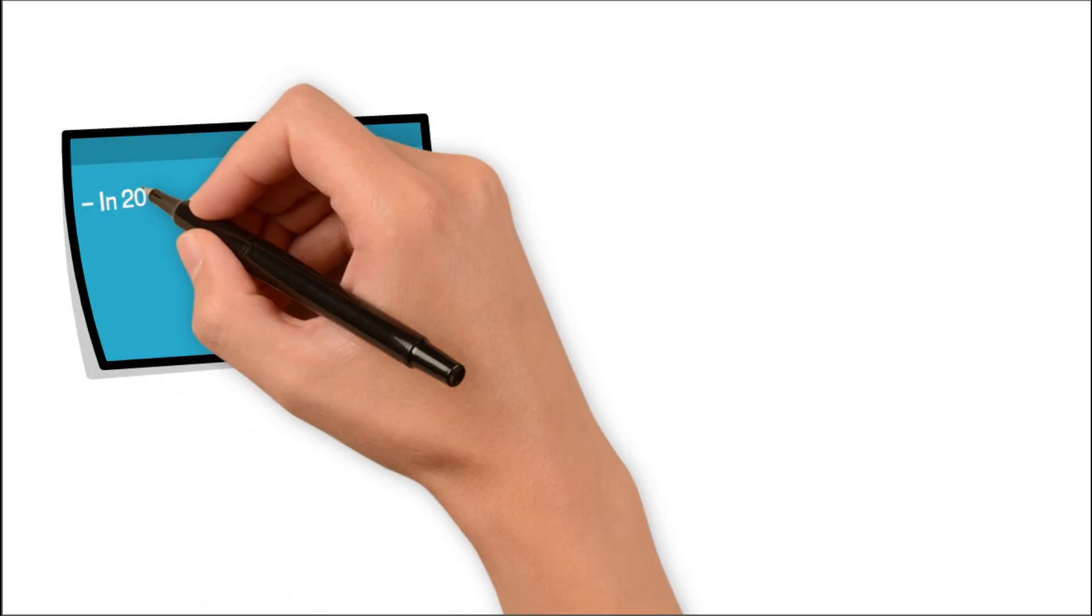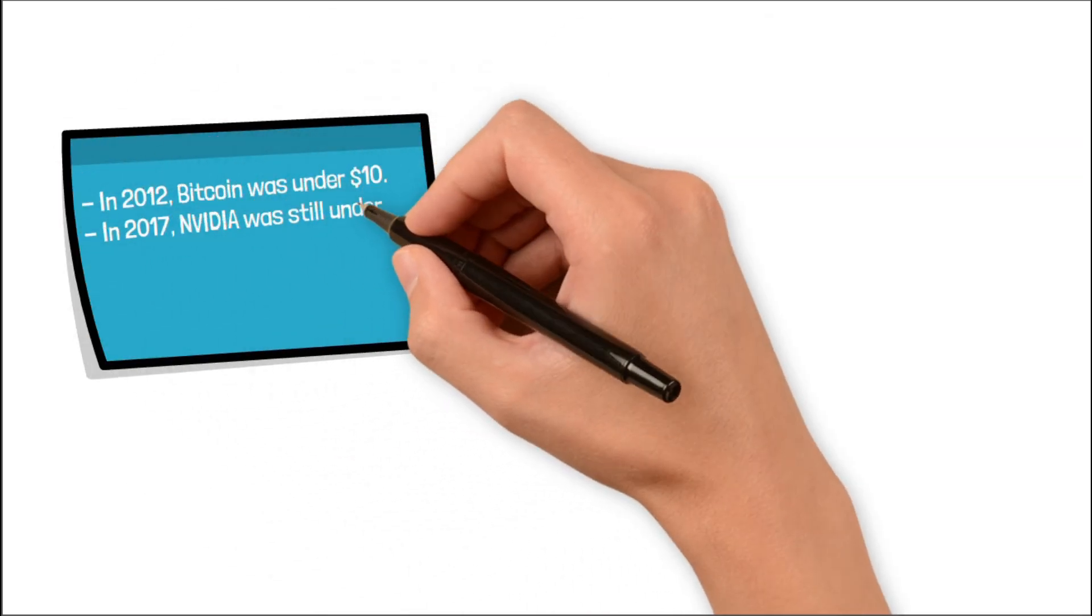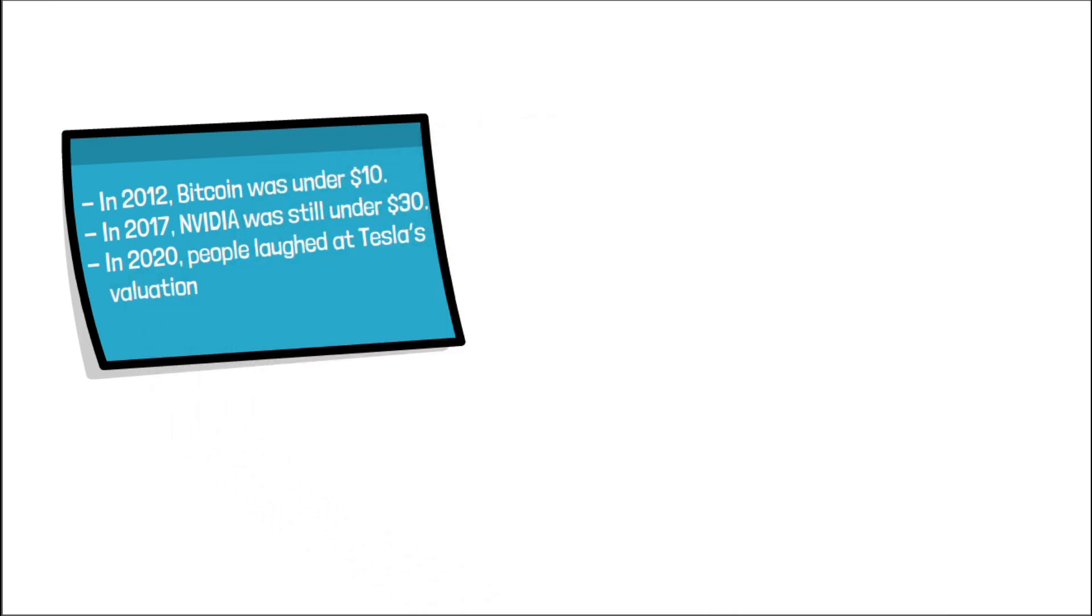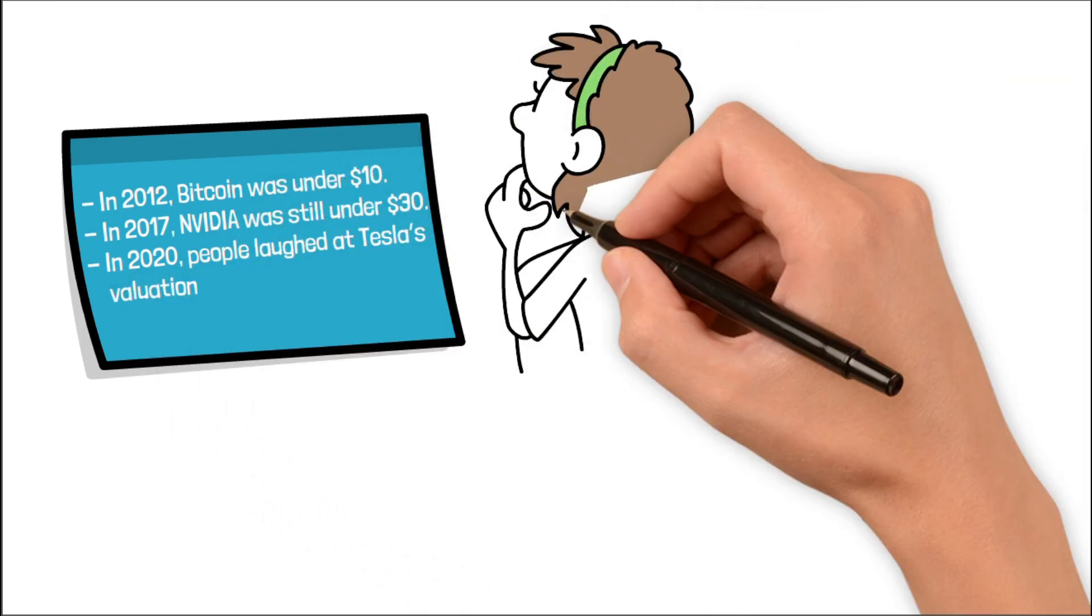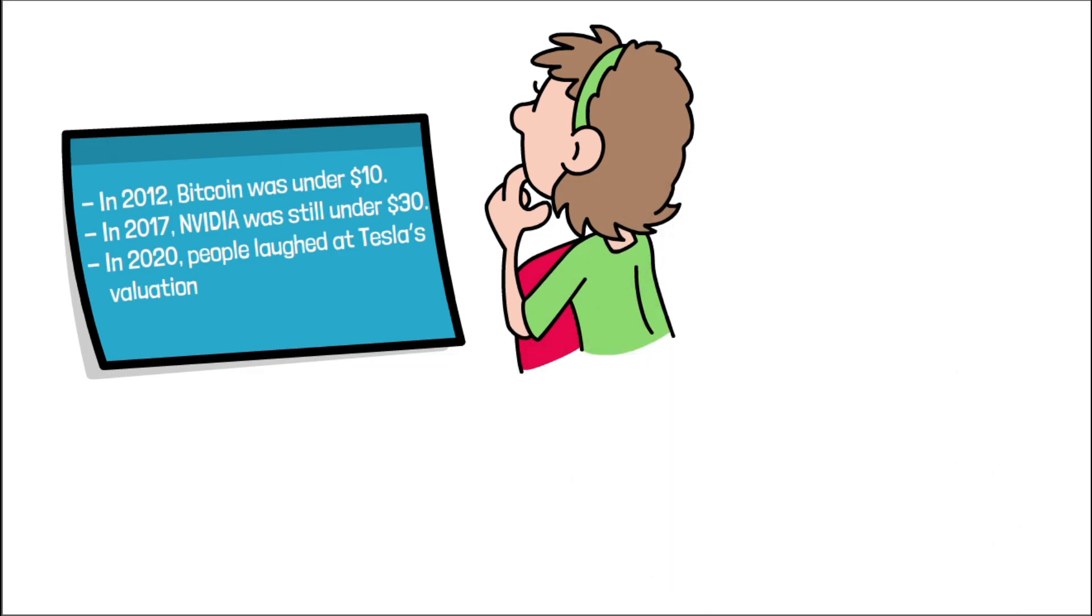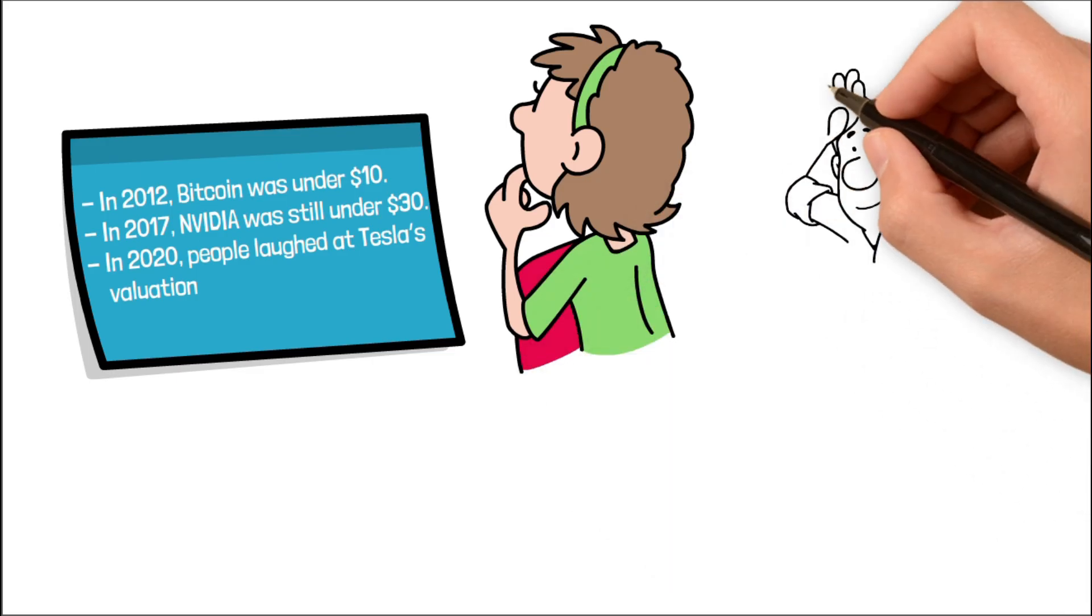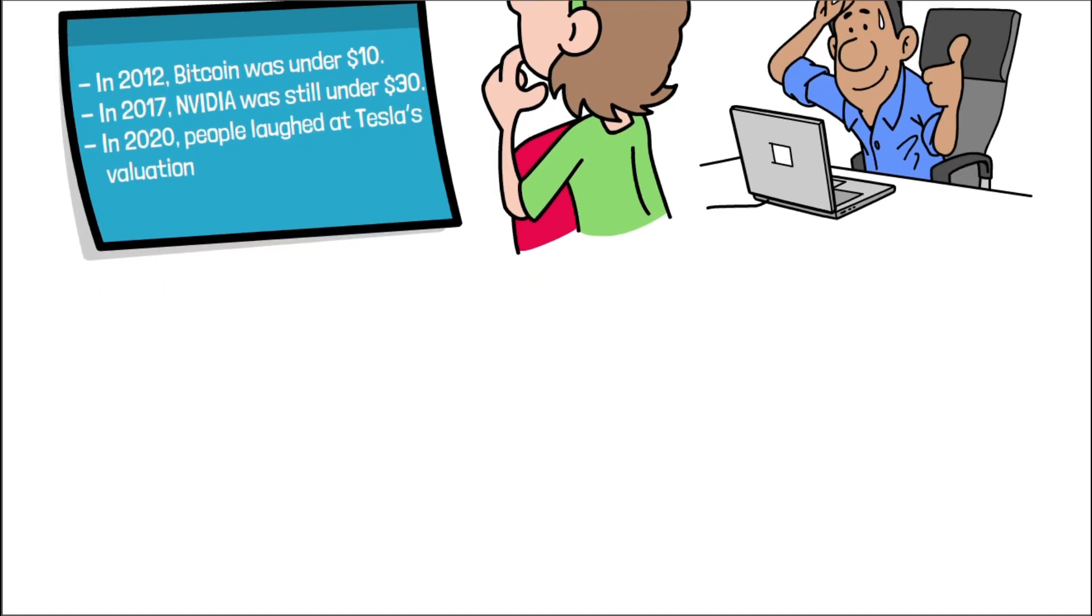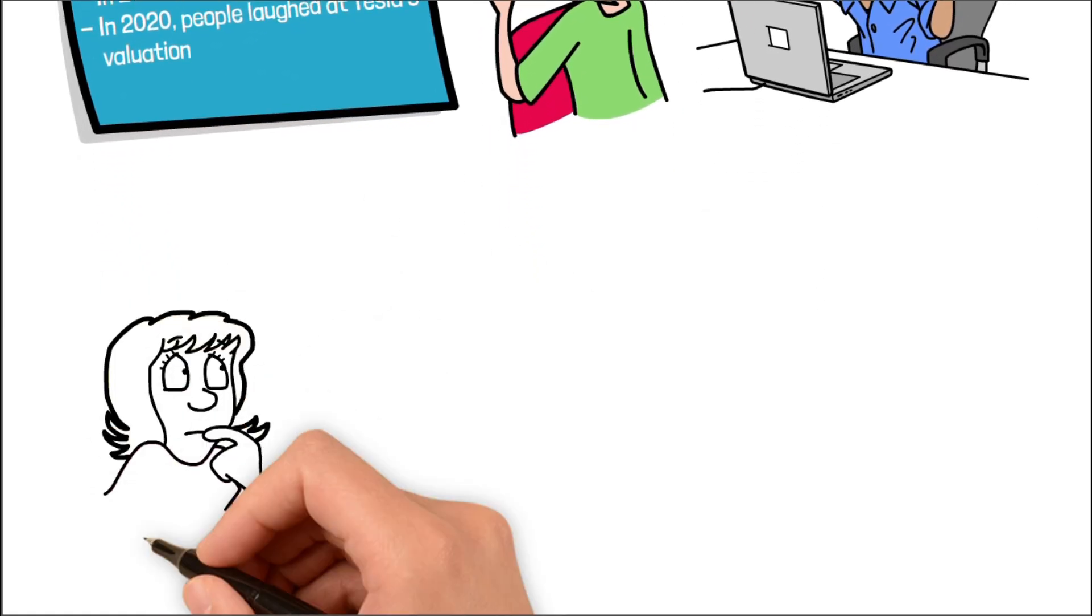Let's rewind. In 2012, Bitcoin was under $10. In 2017, NVIDIA was still under $30. In 2020, people laughed at Tesla's valuation. Those weren't safe bets at the time. They looked risky. They looked weird. But they were early. And the people who studied, learned, and positioned, they weren't lucky. They were ready. Quantum in 2025 feels like that.